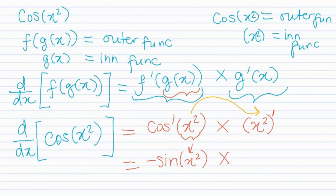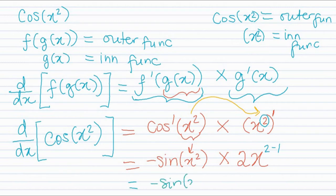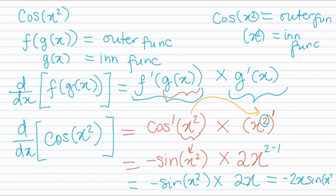Now we differentiate the inner function x². Using the power rule, the exponent 2 comes down to give 2x, and the exponent decreases by one. So our answer is: negative sin(x²) · 2x, which we can also write as −2x·sin(x²). That is the answer.